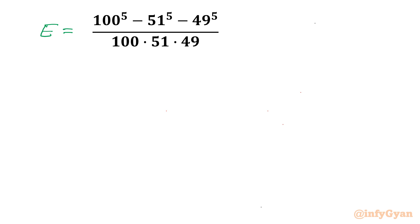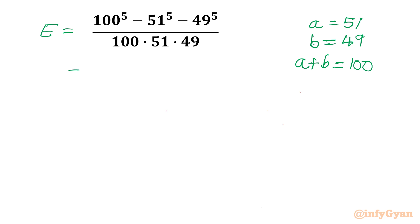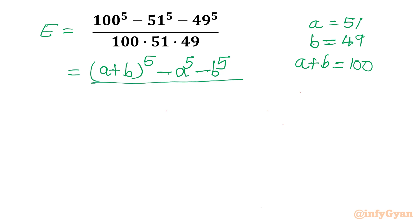We can presume A equal to 51 and B equal to 49. Then we can see 100 is A plus B, so A plus B we will consider 100. Our expression will become: A plus B whole power 5, minus A power 5, minus B power 5, divided by A plus B times A times B.